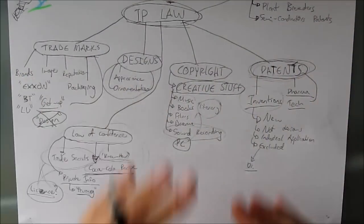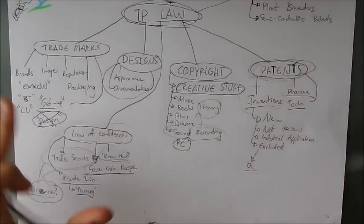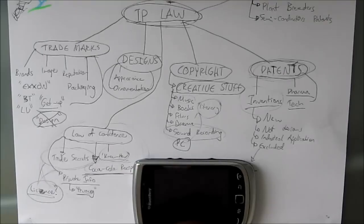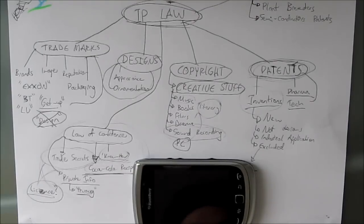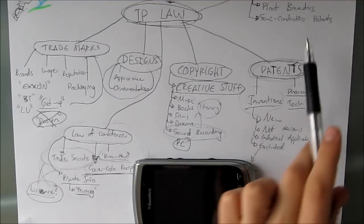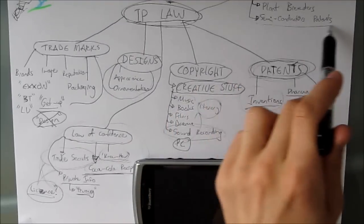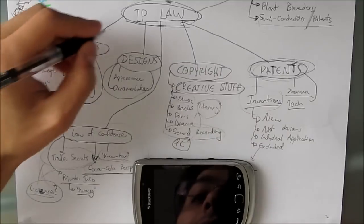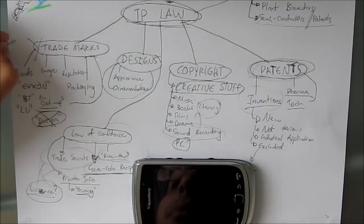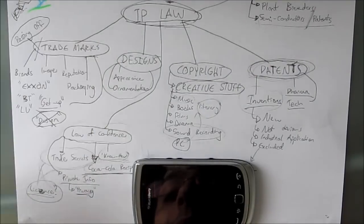If we look at all of IP law, there is quite an overlap — they interrelate and work together. A good example: my BlackBerry phone here is covered by all of these rights, including semiconductor chips. As a side note to trademark, there is the law of passing off, which is a separate tortious right. Some people have referred to it as the law of unregistered trademarks.